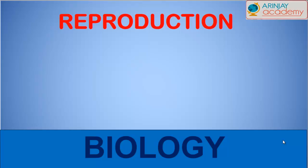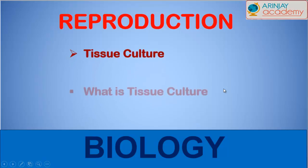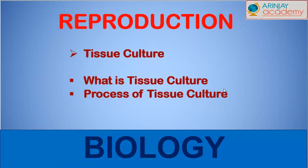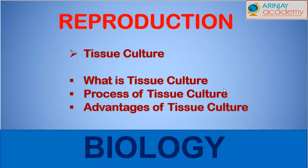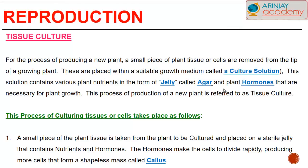Let's have a look at what tissue culture is. Tissue culture is a process for producing new plants from small plant cells or tissues that are removed from the tip of a growing plant. These are placed within a suitable growth medium called a culture solution. This solution contains various plant nutrients in the form of jelly called agar, and plant hormones that are necessary for plant growth.